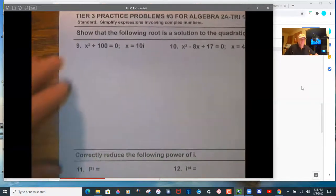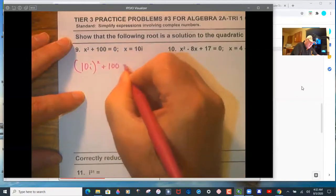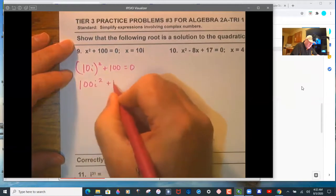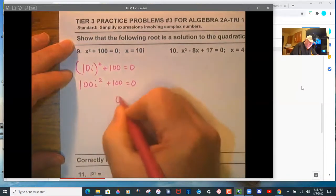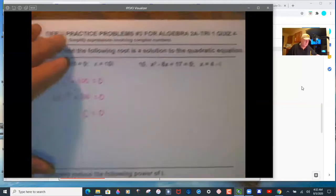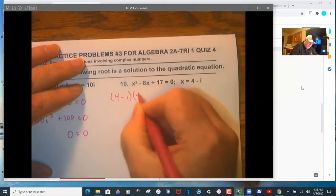Okay, here, so substitute in 10i squared. And you've got to show me the correct term. So I need to see 100i squared plus 100. And then over here, you've got to show me all the correct expanding.